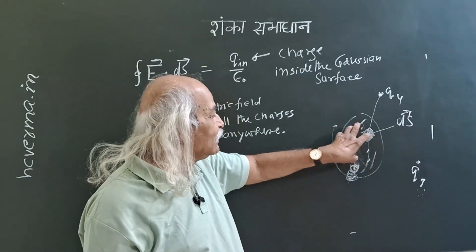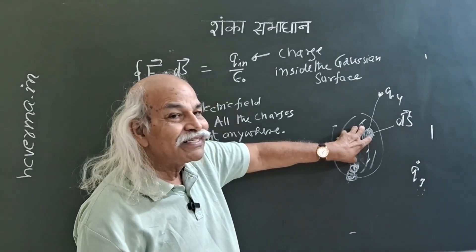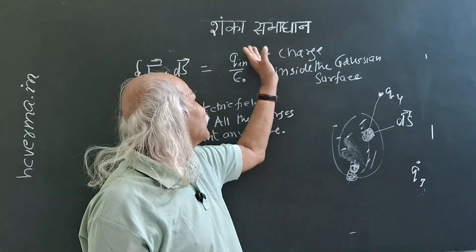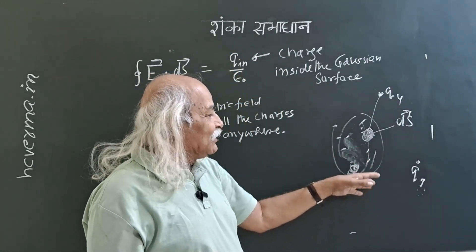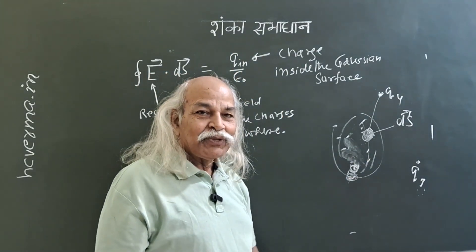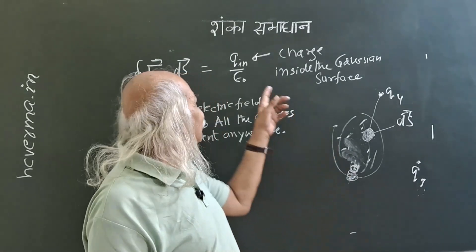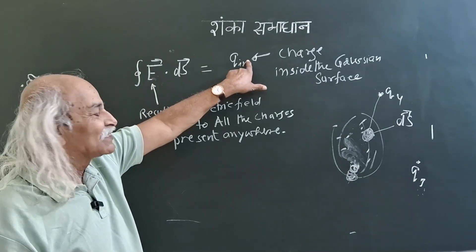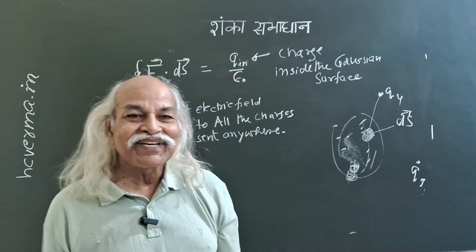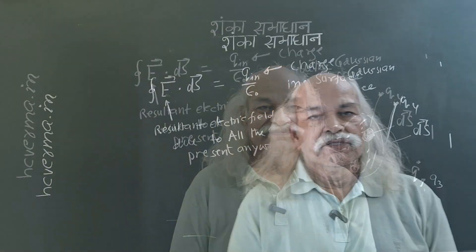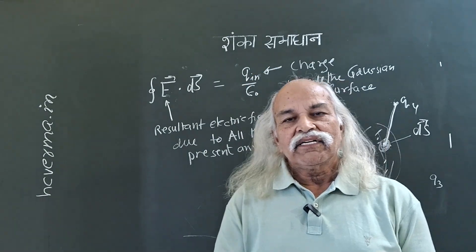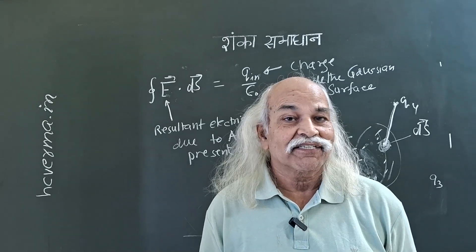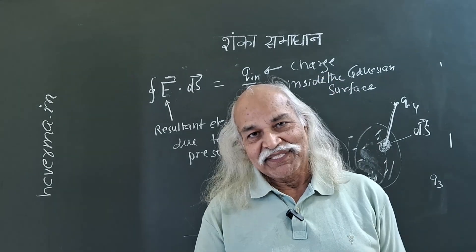Therefore, only the inside charges will give you a net flux, and that flux equals the inside charge divided by epsilon naught. So be very confident: E is the electric field due to all the charges present, and the right-hand side uses only the charge inside — and still it works. Now the question arises: how do we apply Gauss's law to get the electric field at a certain point due to a charge distribution?